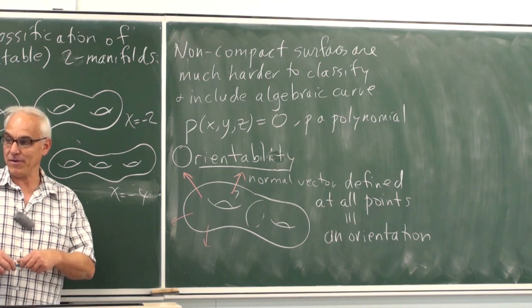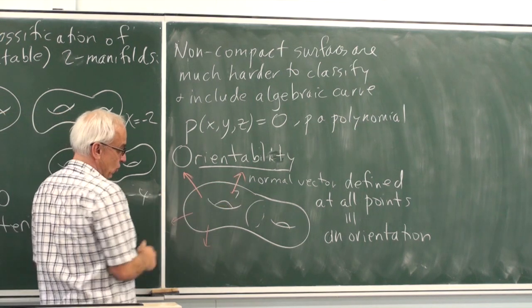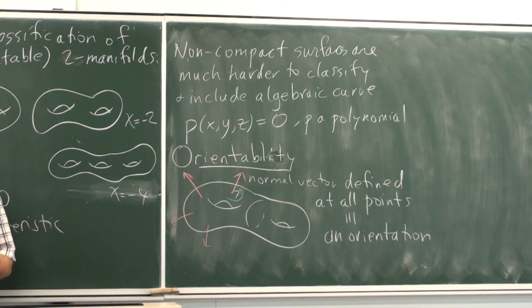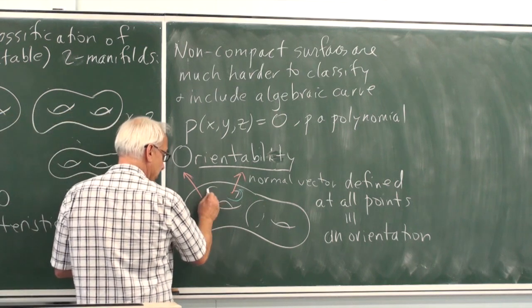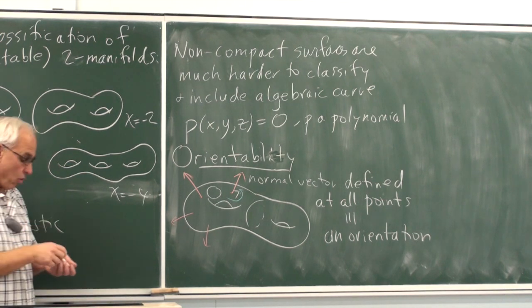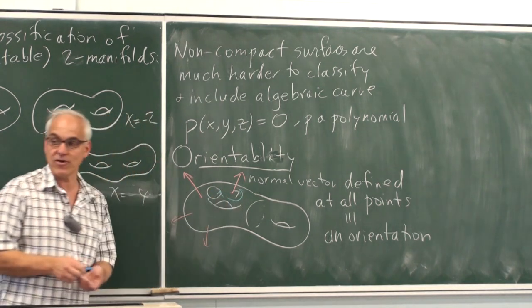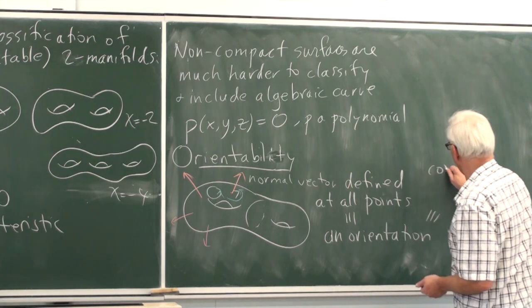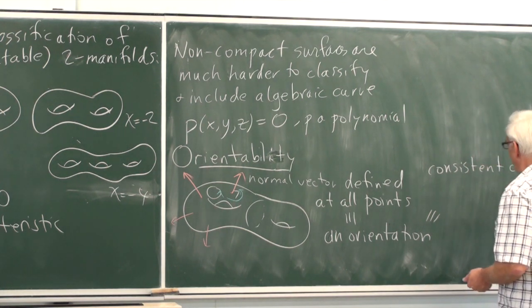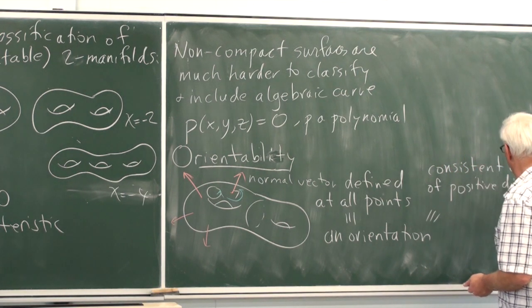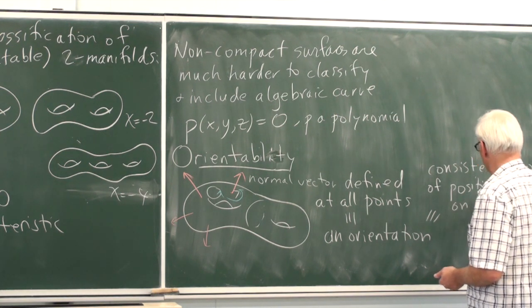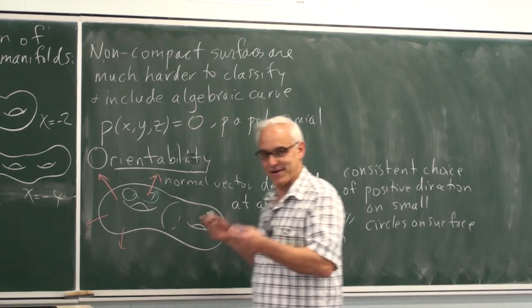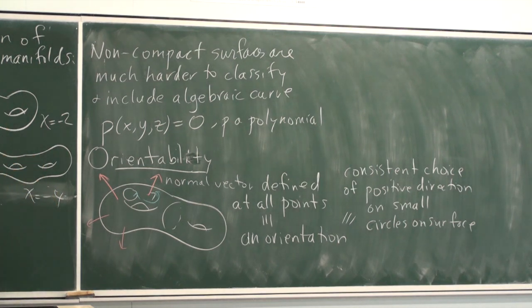There's an equivalent way of thinking about this in terms of just staying on the surface. Once you think of having a normal at every point, you can use a right-hand rule to define an orientation of a circle on the surface. Having a normal vector allows us to give a consistent positive direction to any small circle. This is really equivalent to a consistent choice of positive direction on small circles on the surface — a more intrinsic way of saying it that doesn't involve going outside the surface into the three-dimensional ambient space.